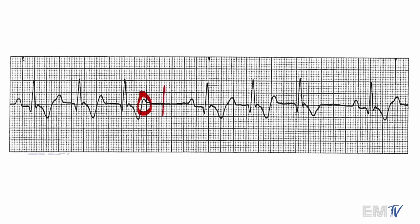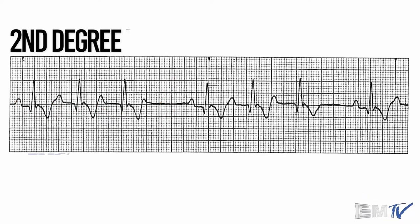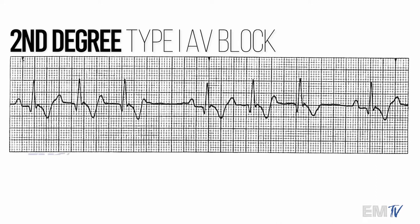Right here, there's a P wave and there's no corresponding QRS complex with it, which makes it one of the second-degree blocks. However, the difference between second-degree type 2 and second-degree type 1 is the PR interval and whether or not it's consistent. So let's go ahead and measure our PR interval. We notice here that the PR interval is actually becoming longer before there's a drop-off in QRS complex. There's only one type of heart rhythm that does this. So I would diagnose this as a second-degree type 1, or a Mobitz 1, or a Wenckebach — it has three different names for it.